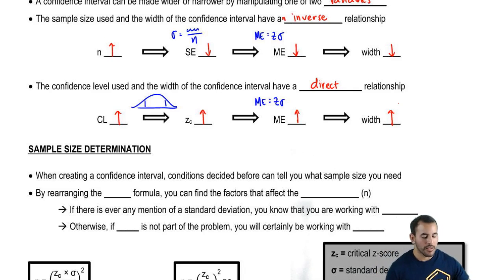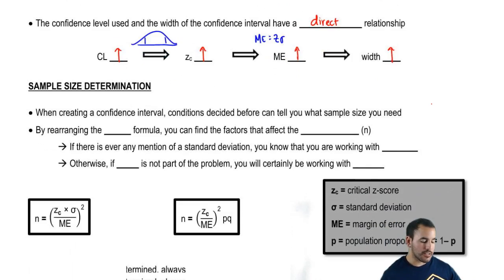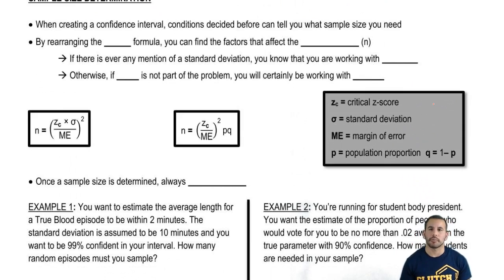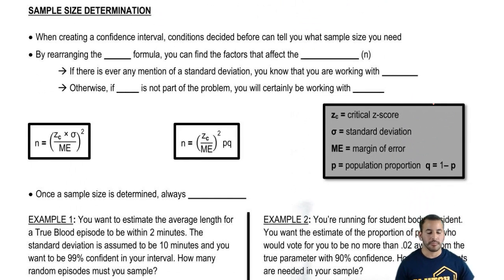So to summarize: as sample size goes up, the width of the confidence interval goes down. And as the confidence level goes up, the width of the confidence interval also goes up. Now let's talk about our last practical topic: sample size determination.